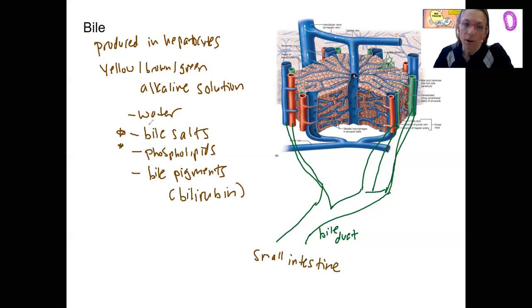These two here and bile salts are going to be what we talk about the most. Bilirubin, just as a little bit of a side note, is produced in the spleen due to breakdown of red blood cells.